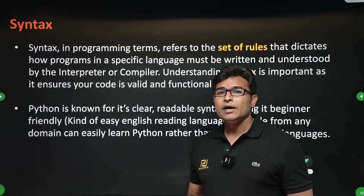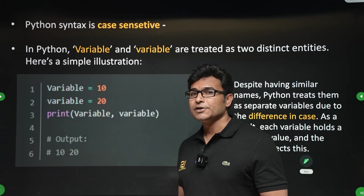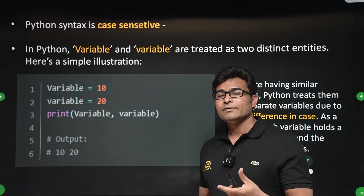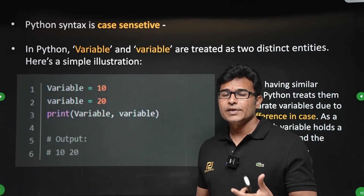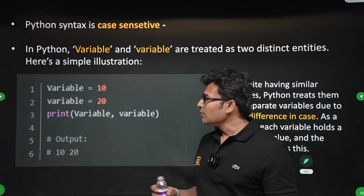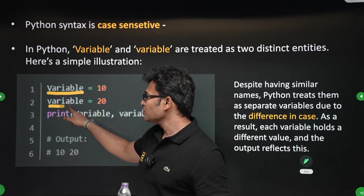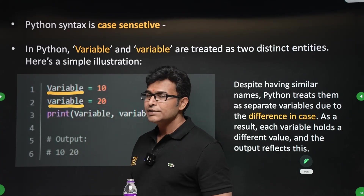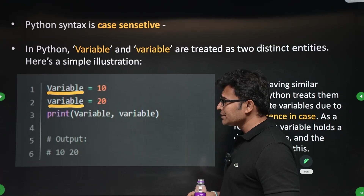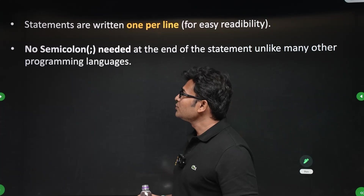In Python, it is case sensitive. Case sensitive means if you change the case of a variable or any name, it will be considered as a different object altogether. For example, if you look at this variable written two times — one time 'V' is capital and one time 'v' is small — those are two different variables.